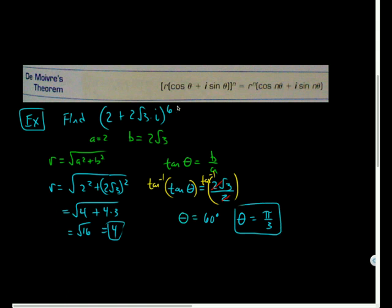So now I can write this in polar form. The original number in polar form would be 4(cos(π/3) + i sin(π/3)). So there's the number in polar form. And now what am I doing with it? I'm raising it all to the 6th. All I've done so far is just convert from rectangular to polar, nothing fancy.